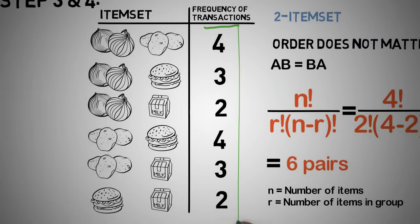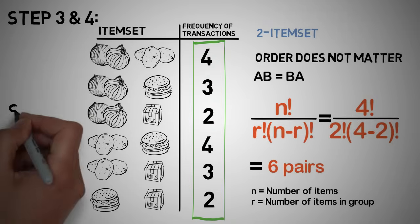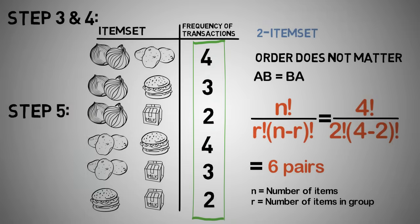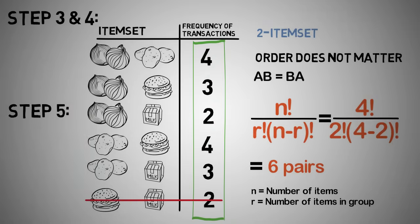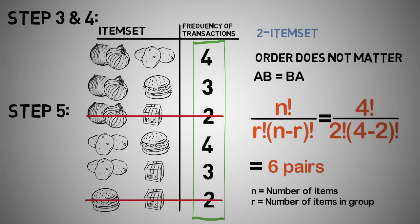Step 4: we now calculate the occurrences of each pair in all the transactions. Step 5: again, only those significant item sets which cross the support threshold are passed through. These are onions and potatoes, onions and burgers, potatoes and burgers, and potatoes and milk.